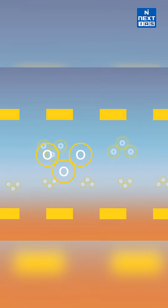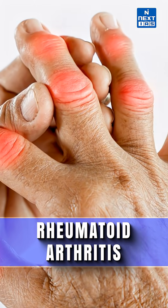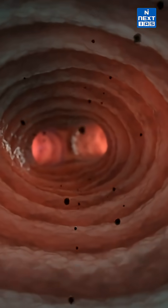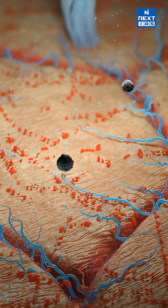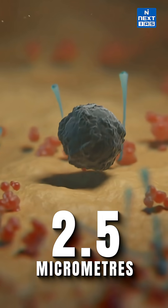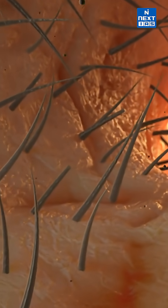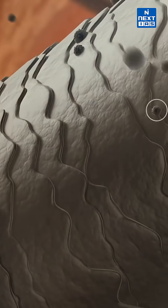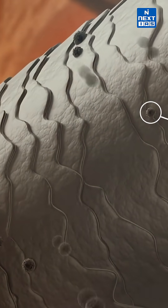Nitrogen oxides and ozone are also increasing the tendency of joint pains and rheumatoid arthritis in Delhi citizens. PM 2.5 means the size of these particles is less than 2.5 micrometers. A human hair's average diameter is 50 to 70 micrometers, whereas a particulate matter is only 2.5 micrometers.